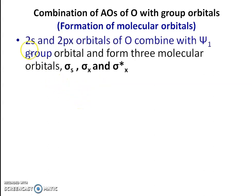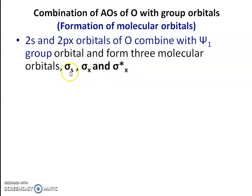The 2s and 2px atomic orbitals of oxygen combine with the ψ1 group orbital and form three molecular orbitals: σs, σx, and σ*x. Of these three orbitals, σs and σx are the bonding molecular orbitals, and σ*x is the antibonding molecular orbital.